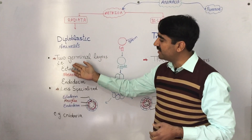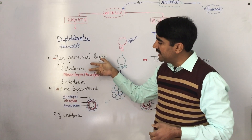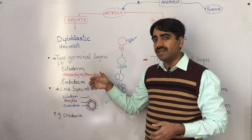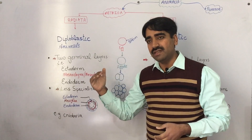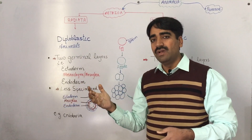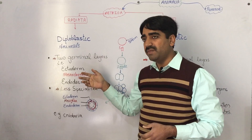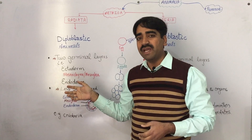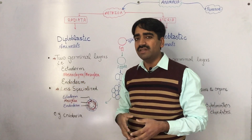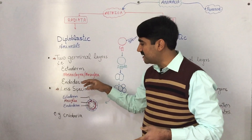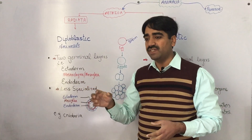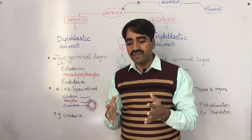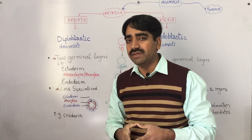Diploblastic animals have two germinal layers: the ectoderm and the endoderm. Sometimes there is a jelly-like mass present in the middle called mesoglia. It is not a layer and not a specialized tissue — it just helps in the diffusion of materials and waste between the ectoderm and the endoderm.